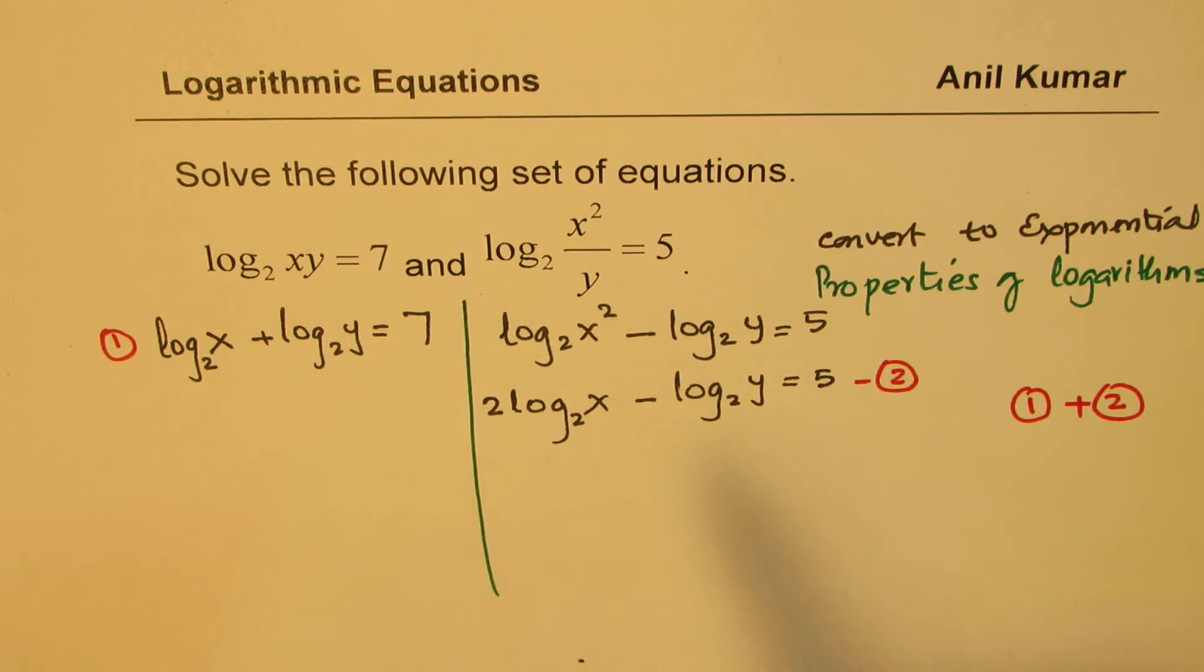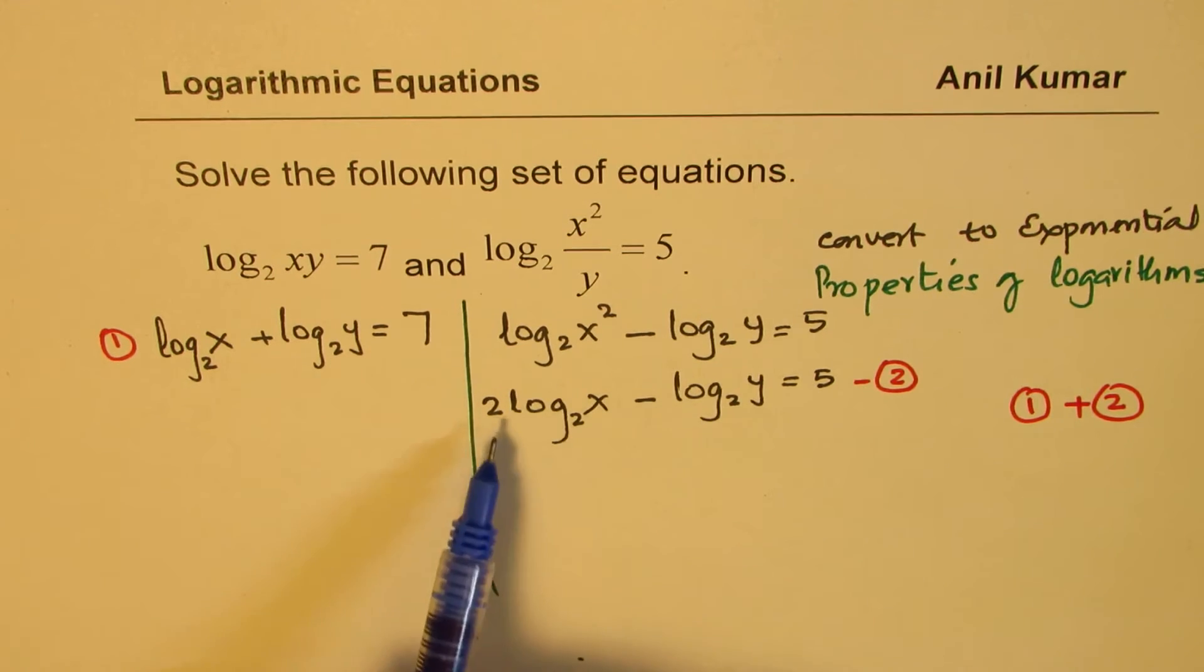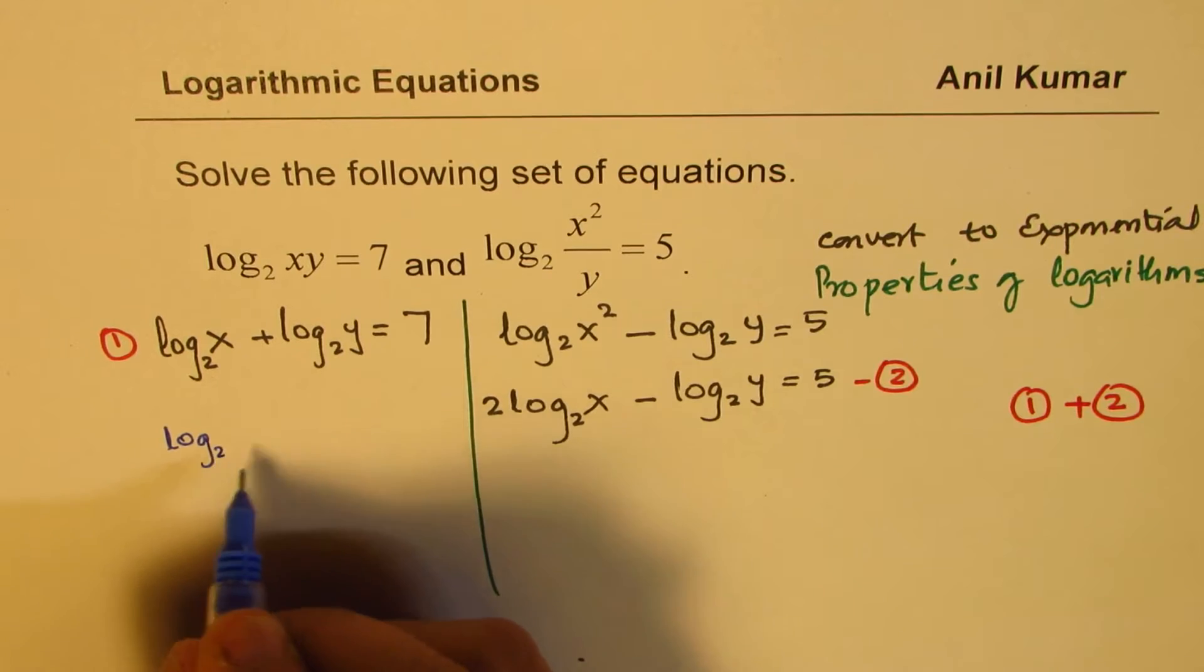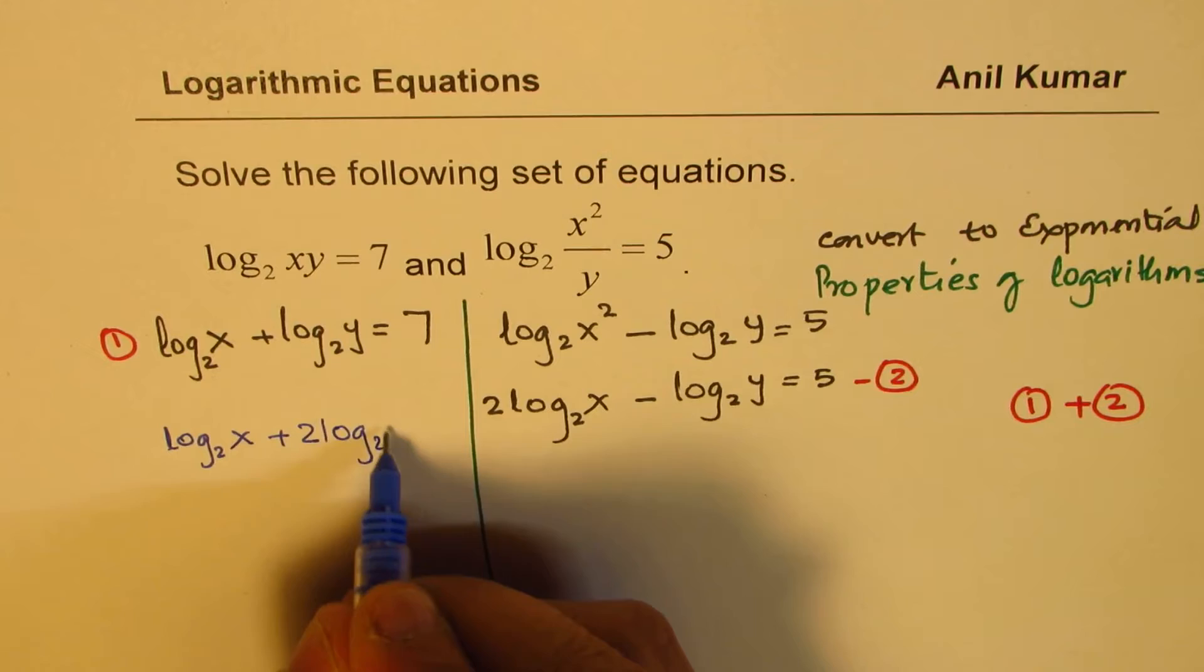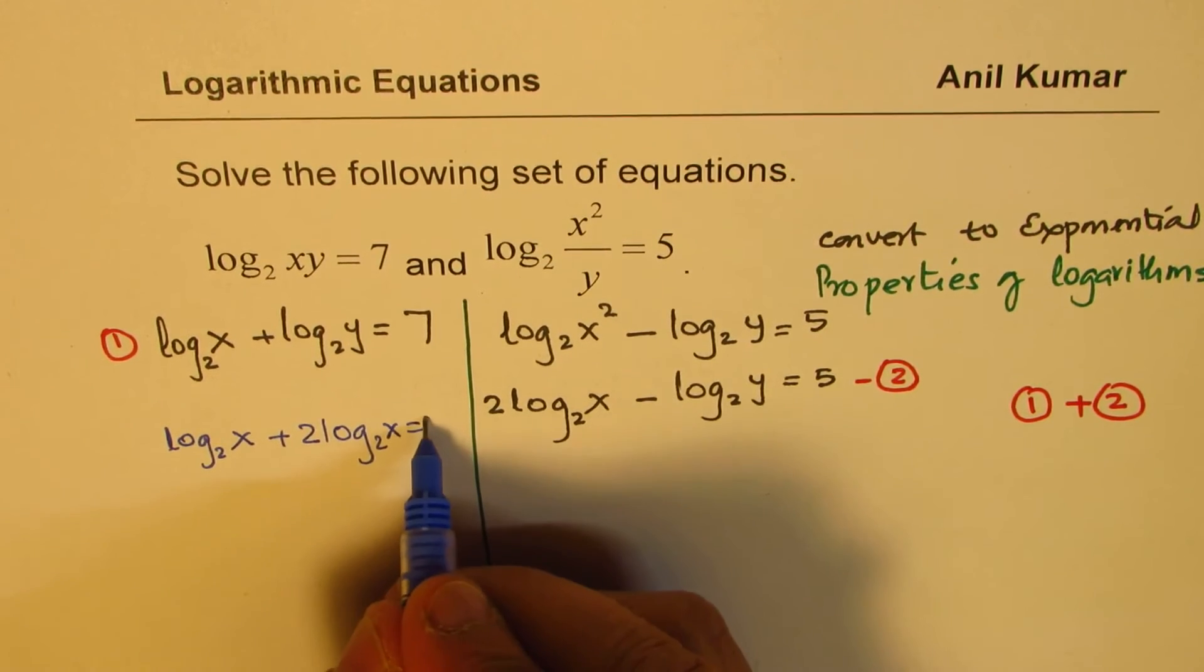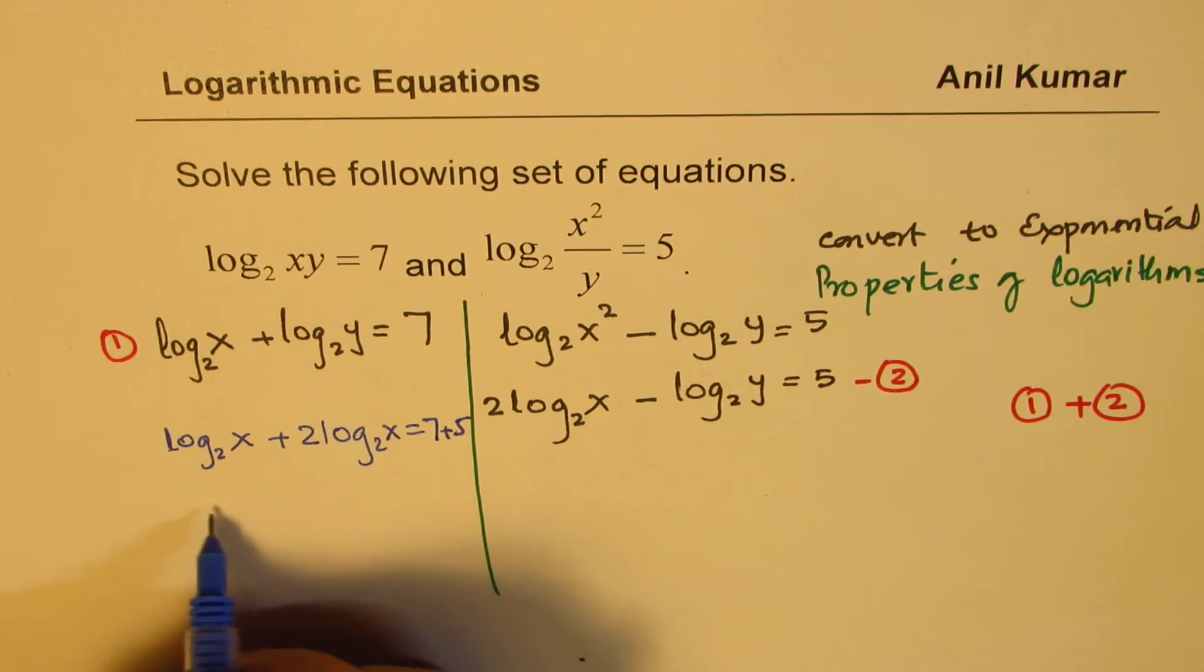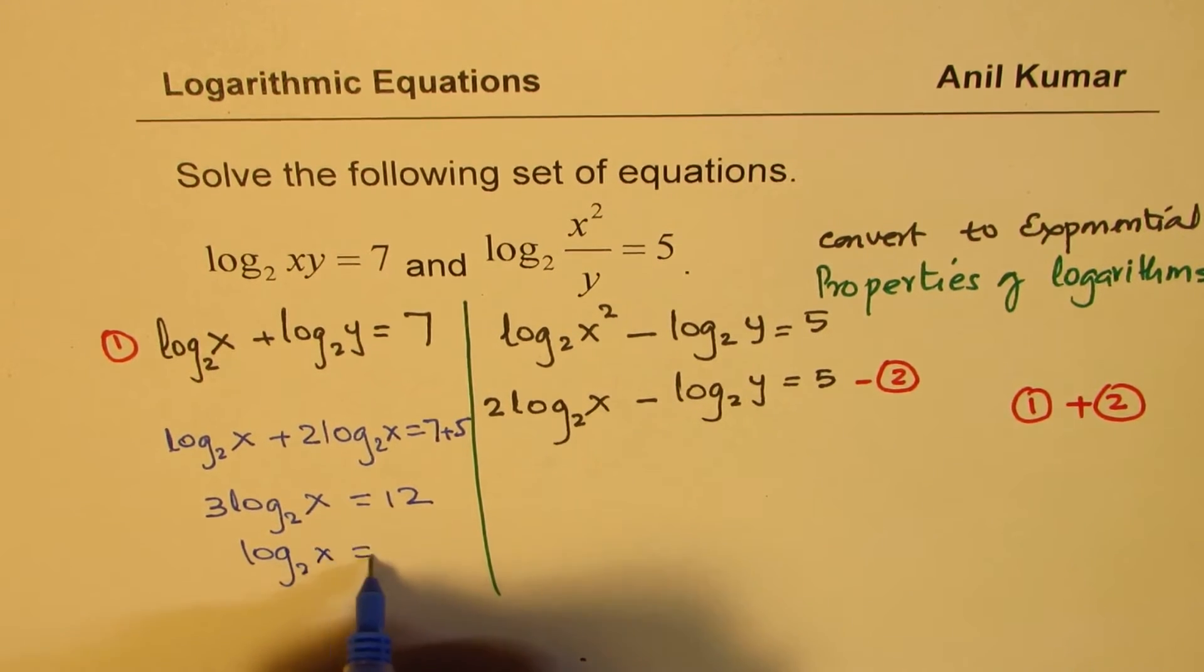So if I add equation 1 and 2, then log base 2 of y will cancel. And what we get here is basically log base 2 of x plus 2 times log base 2 of x equals 7 plus 5. Now that gives you 3 log base 2 of x equals 12, and that means that log base 2 of x is 12 divided by 3 which is 4.